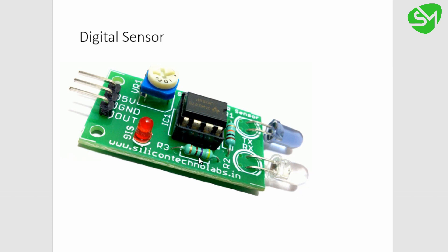When the sensor detects something, it will give a high or low signal depending on the sensor being used. When the object is removed, it gives a low signal on the output pin. So it has only two output values: one is high and another one is low.